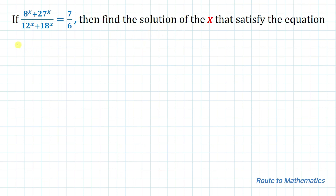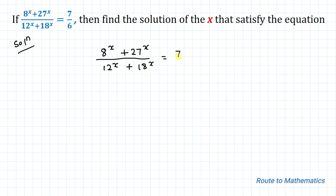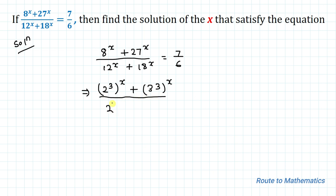Without any delay, let's start solving this question. The given equation is 8 to the power x plus 27 to the power x, divided by 12 to the power x plus 18 to the power x, equals 7 by 6. In the next step we are going to prime factorize all the bases. So 8 can be written as 2 cubed to the power x, plus 27 as 3 cubed to the power x, divided by 12 as 2 squared multiplied with 3, to the power x, plus 18 as 2 multiplied with 3 squared, to the power x.